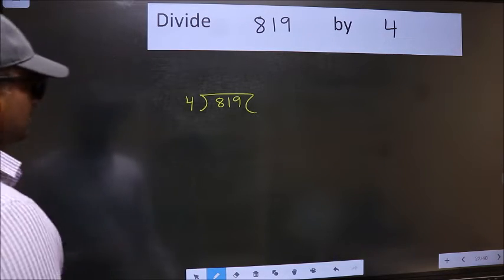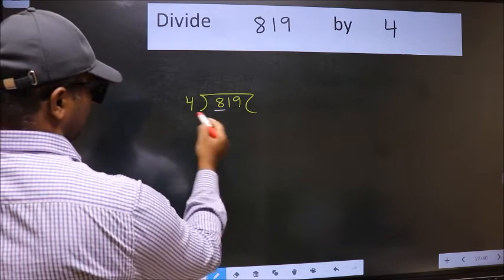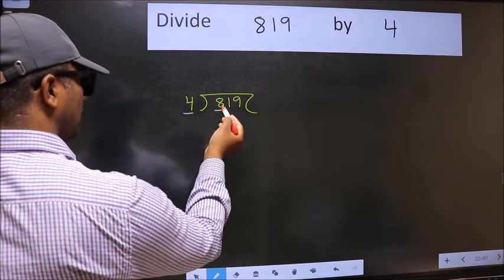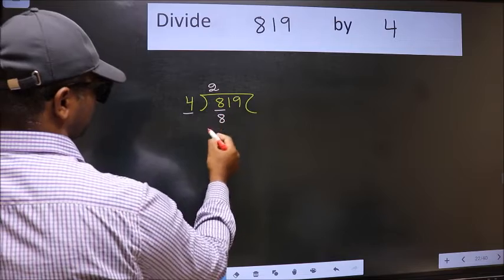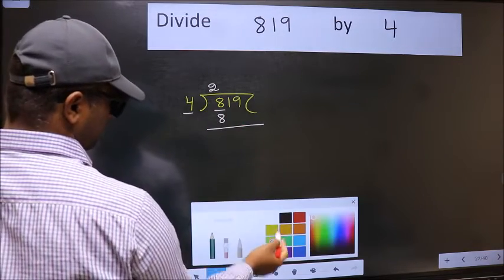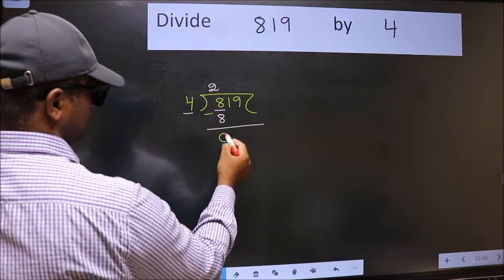Next. Here we have 8 and here 4. When do we get 8 in 4 table? 4 times 2 is 8. Now we should subtract. We get 0.